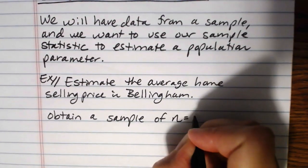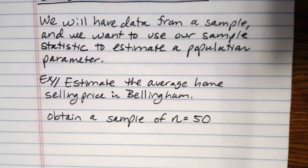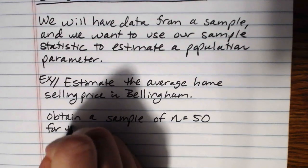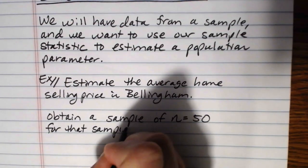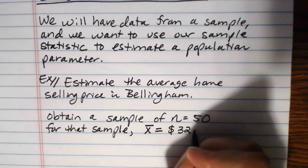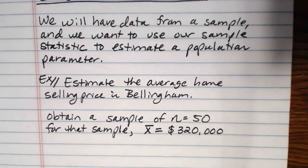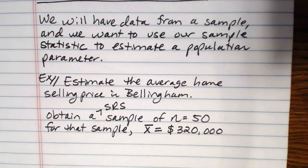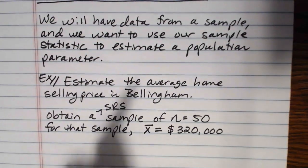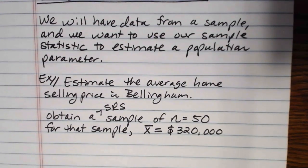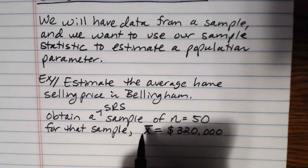Let's say I sample 50 homes that are on the market. And let's say for that sample, X bar, the mean home selling price in the sample is $320,000. And it's important, by the way, that this is a simple random sample. So I've got a simple random sample of 50 homes, and for that sample, X bar is $320,000, the sample mean.